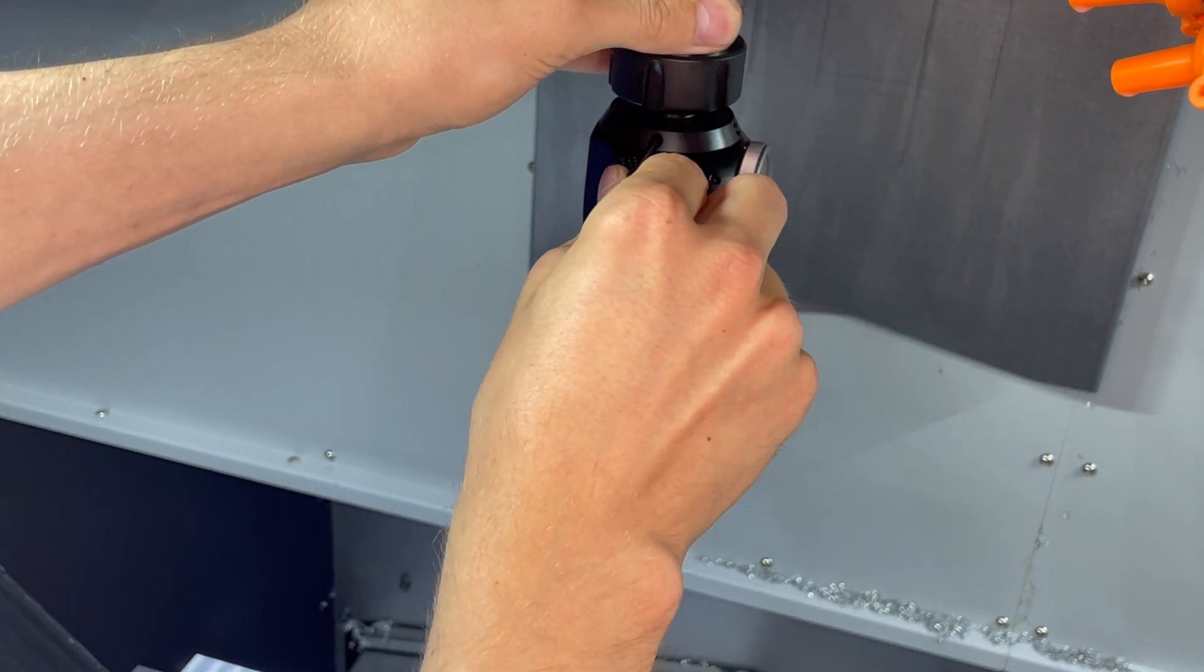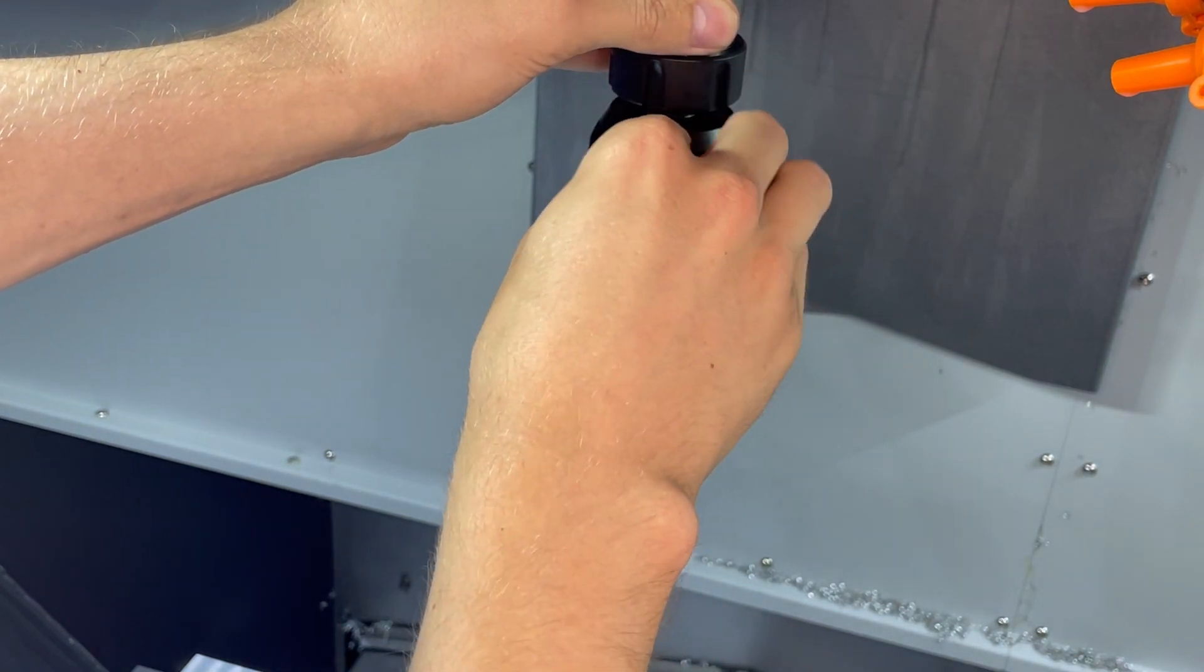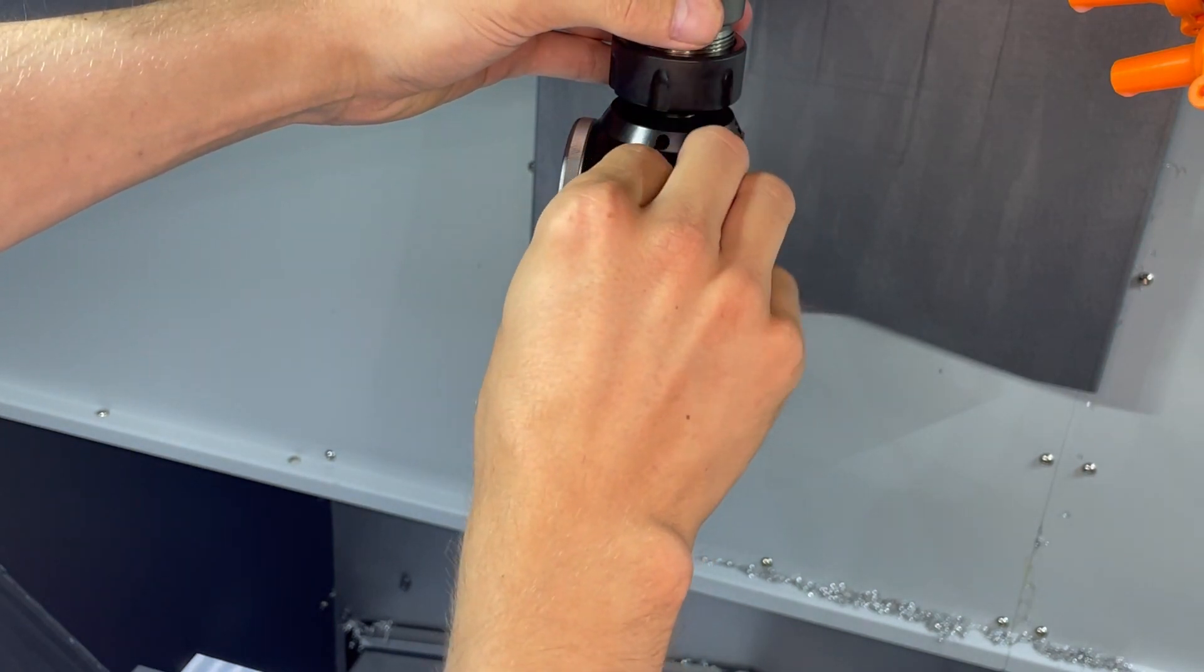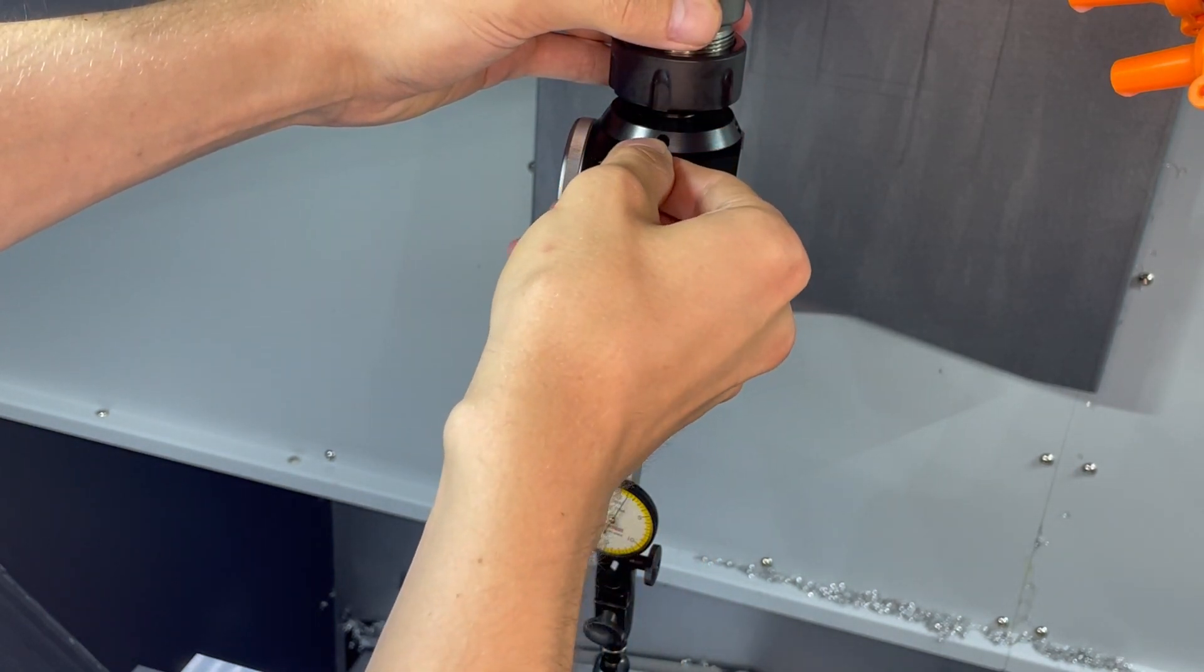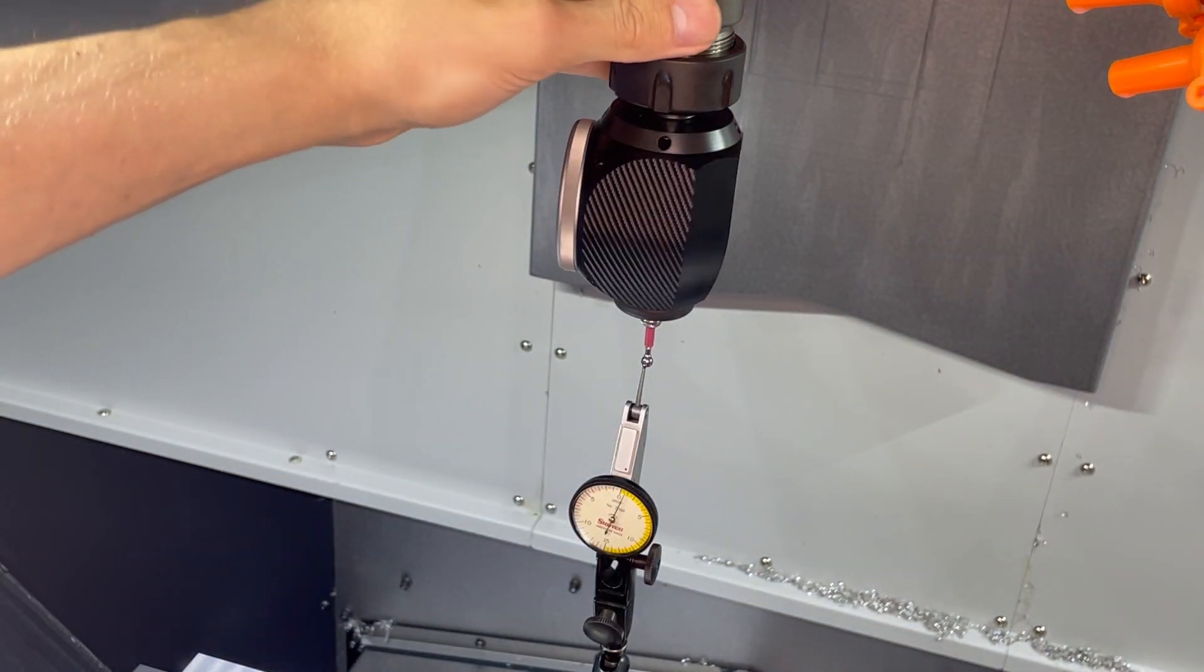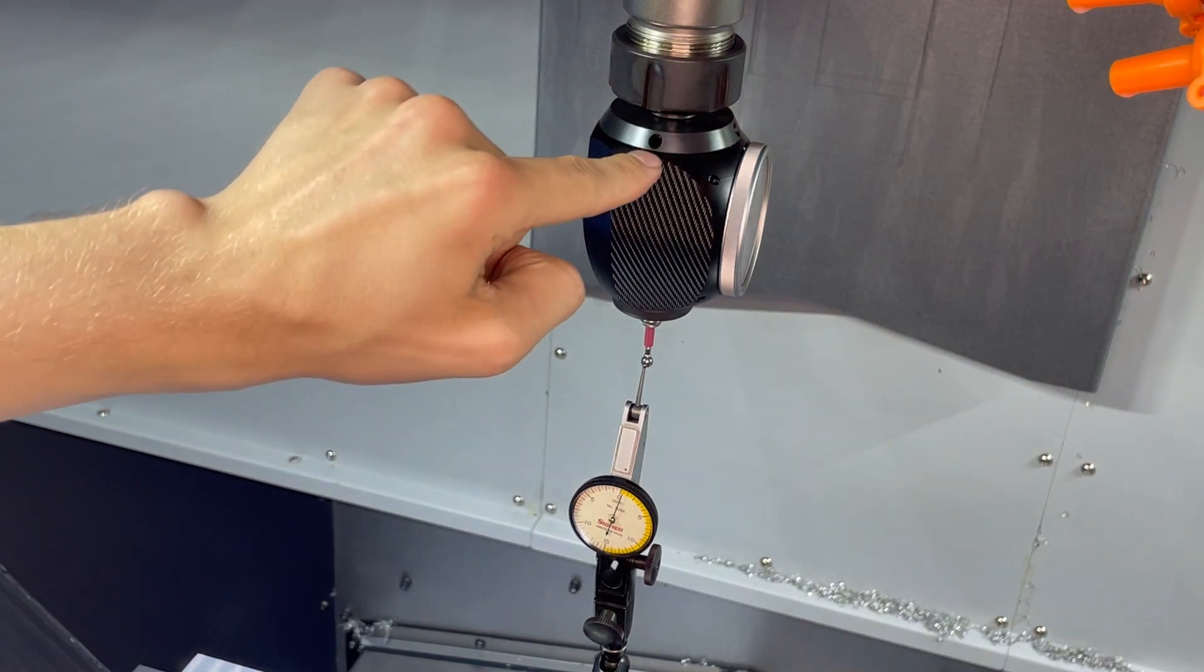Actually I was backwards there, so we want to actually loosen this side and tighten this side. As you see we just made it a little bit worse there. We want to focus on getting two sides even first before we worry about getting it perfect.